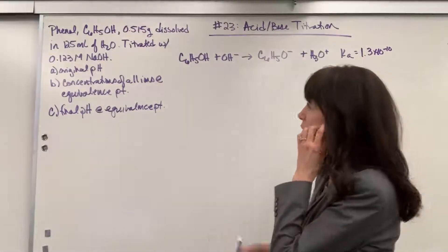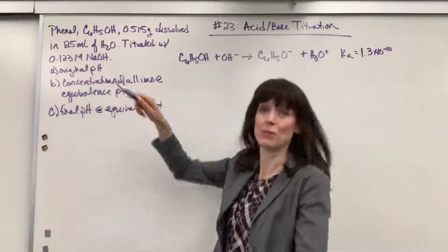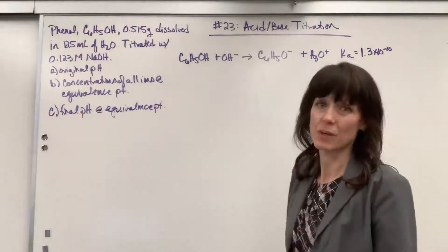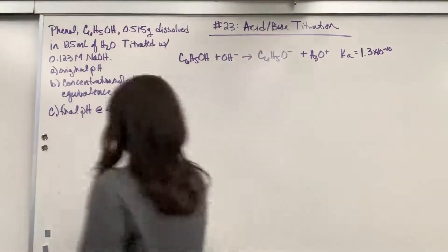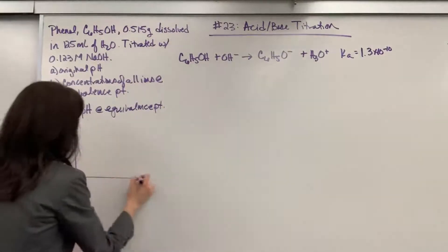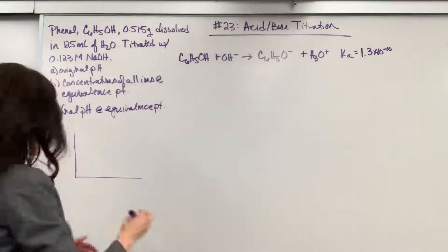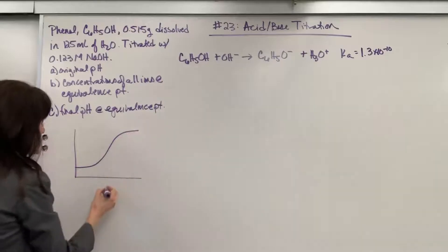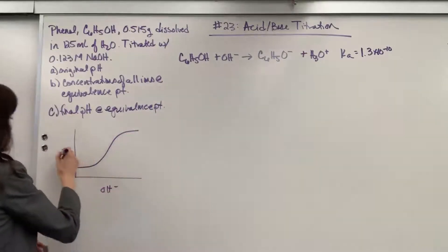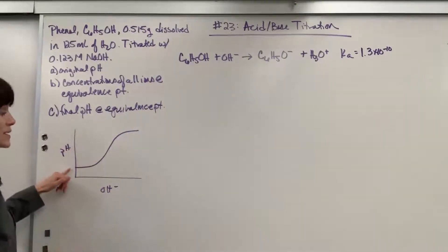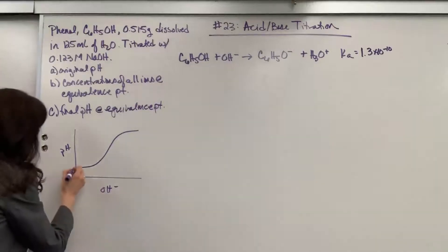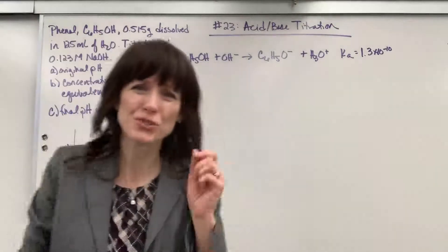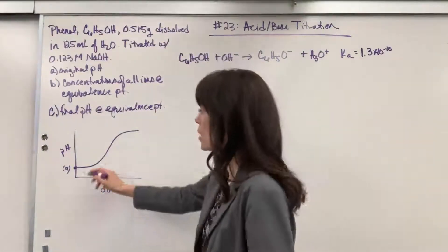So let's start with the original pH — this is actually super easy. This is just a basic ICE table. Let me draw a little table to remind you what's happening. We're going to have this weak acid and we're going to titrate it with the strong base, sodium hydroxide. We're going to be at some low pH initially. That's part A — before you add a drop of sodium hydroxide, what's the pH?